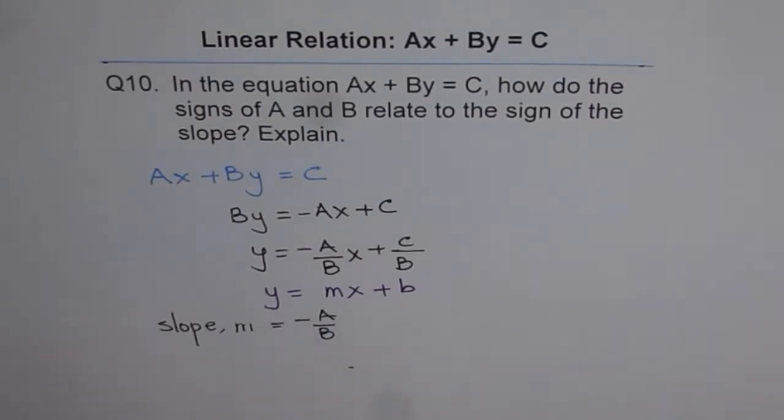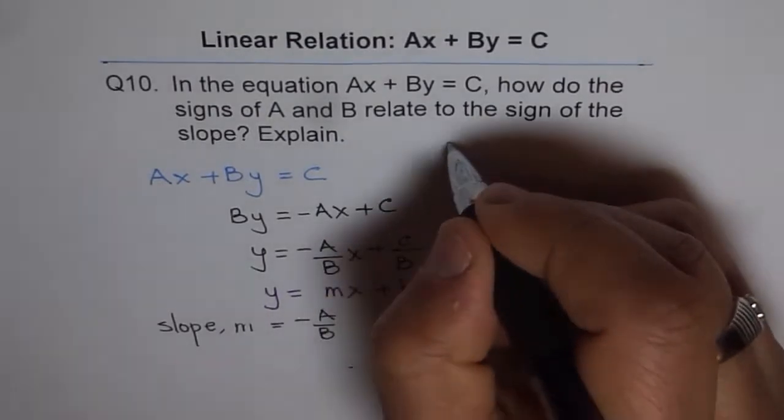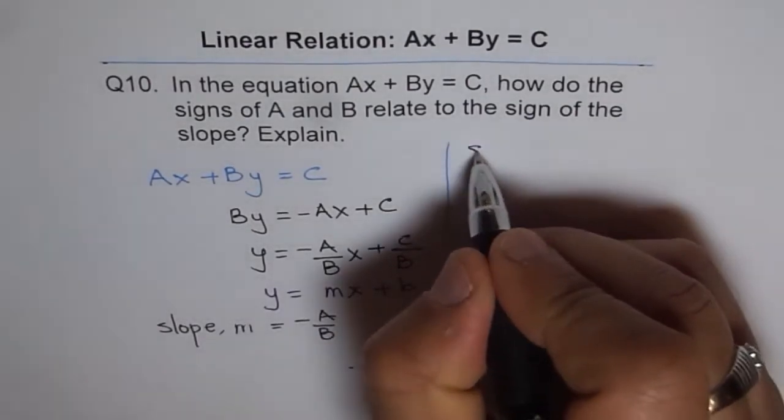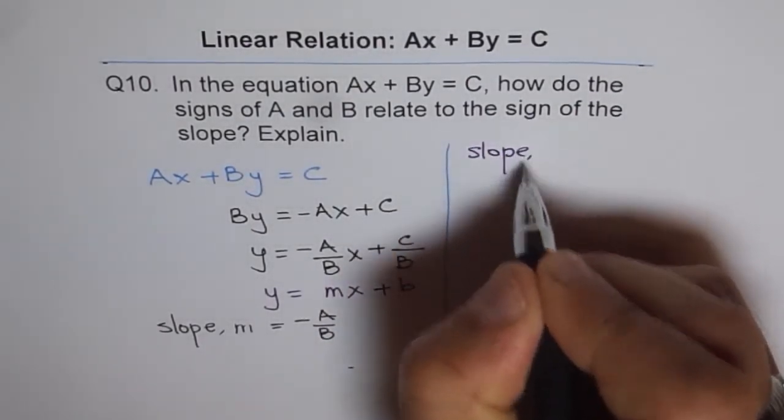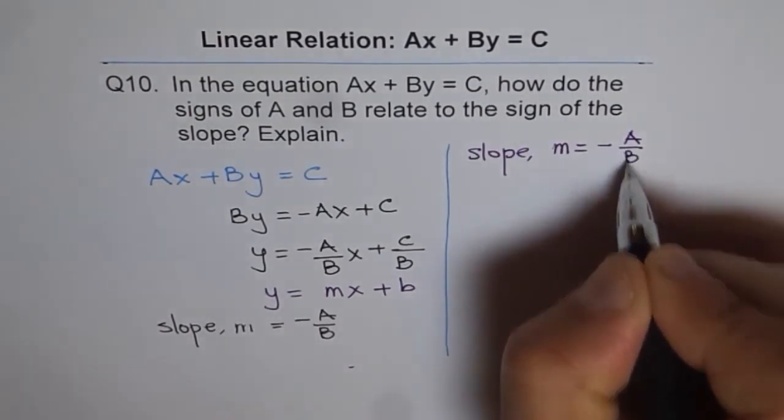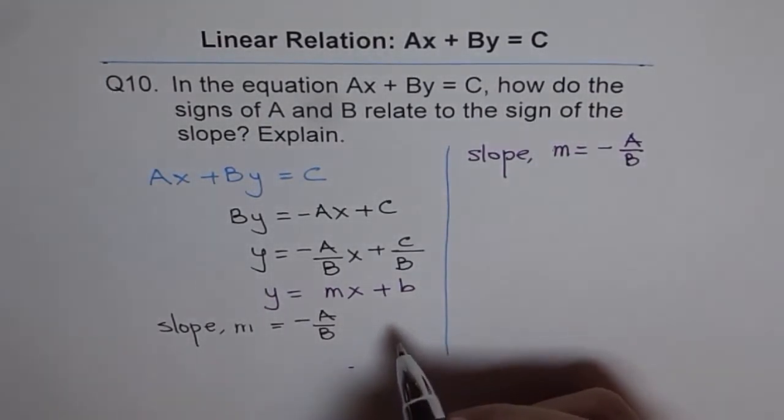Now, how do signs of A and B affect slope? This question can now be answered. We have slope M equals to minus A over B. Let's consider the cases.